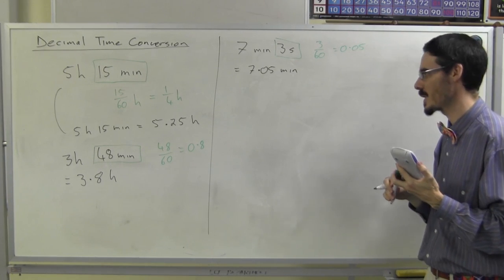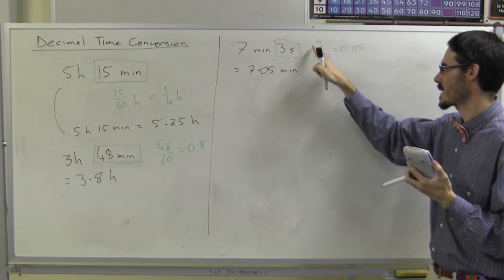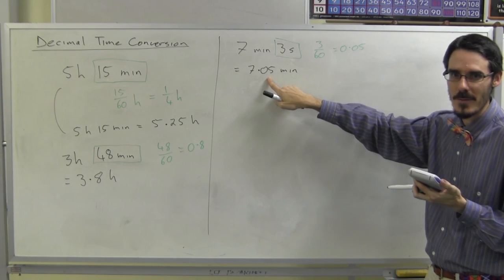Not .3, not .03, but 3 out of 60, which is actually 1 twentieth .05.